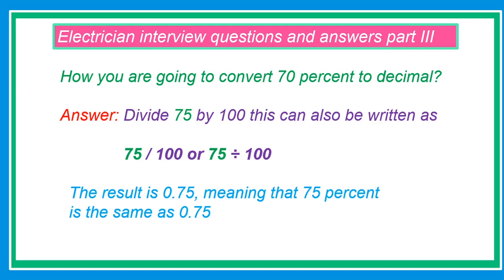How are you going to convert 75 percent to decimal? Answer: Divide 75 by 100. This can also be written as 75 slash 100 or 75 divided by 100. The result is 0.75, meaning that 75 percent is the same as 0.75.